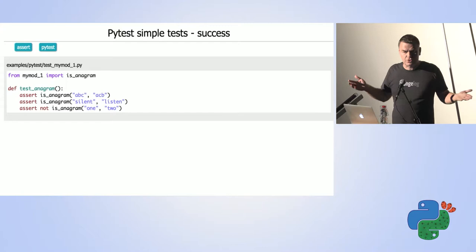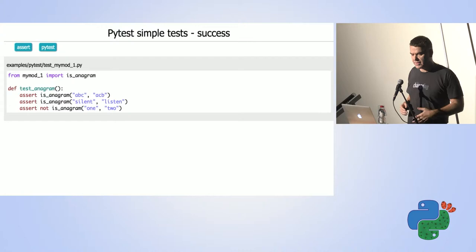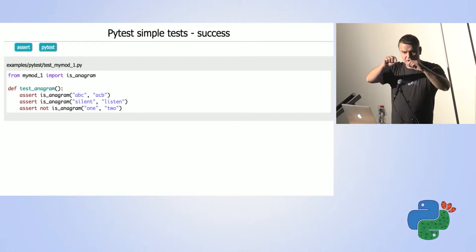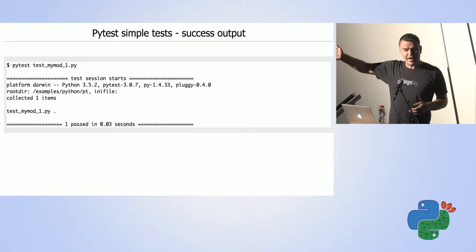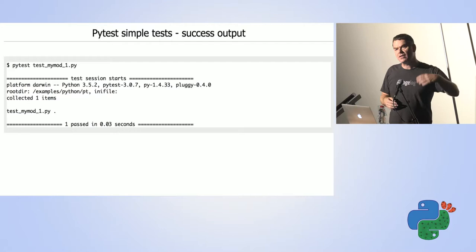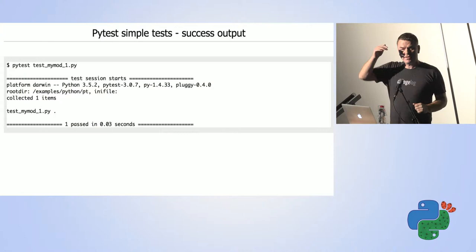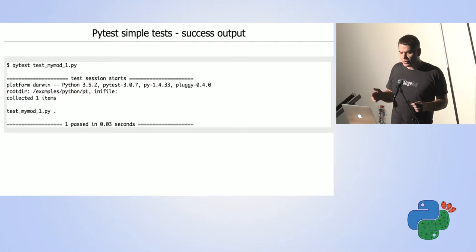This is really simple Python — nothing special, nothing PyTest-specific, basically. Maybe only the fact that I'm calling the file 'test_something' and the function 'test_something'. I could run this function by adding another line calling it and run with Python, or I can use PyTest. I run PyTest with the name of the file, and PyTest will execute the test function — looking in the file for all functions named 'test_something' and running each one, then creating a report.